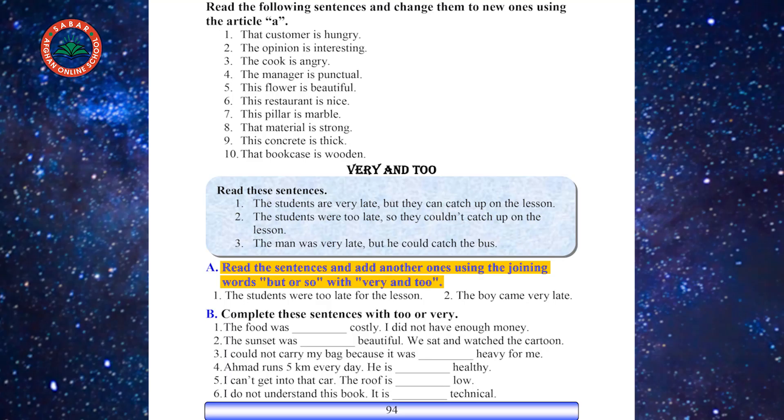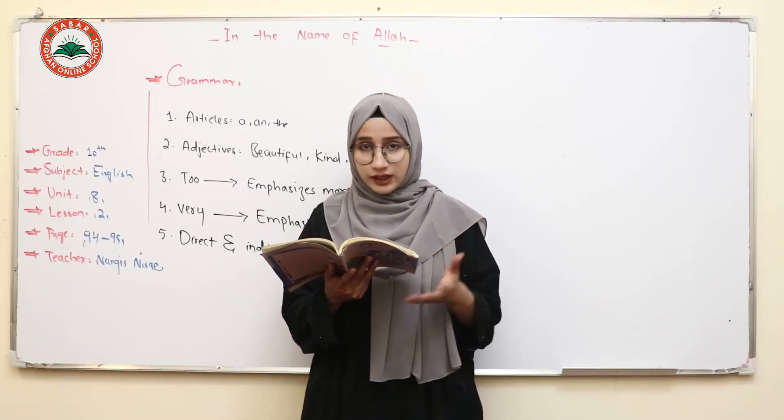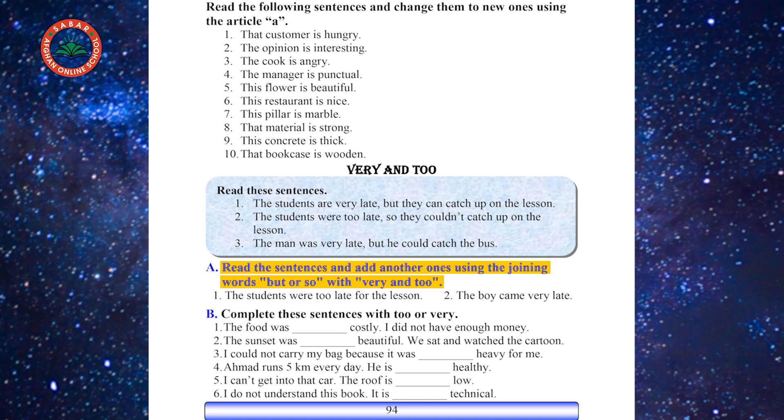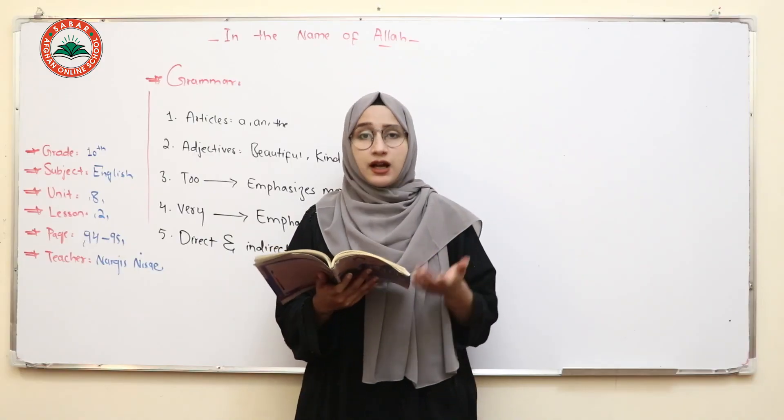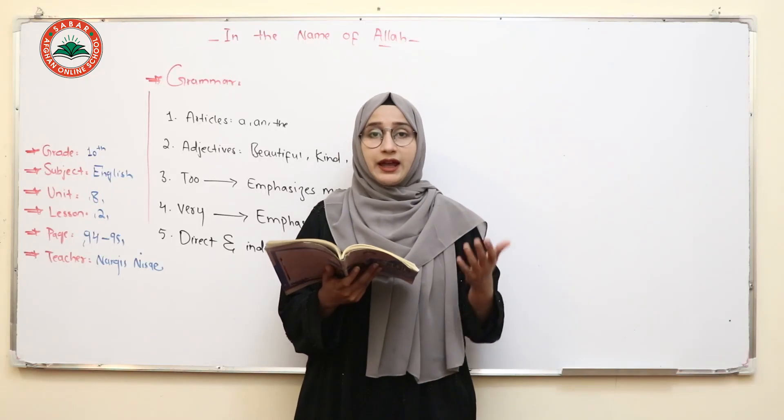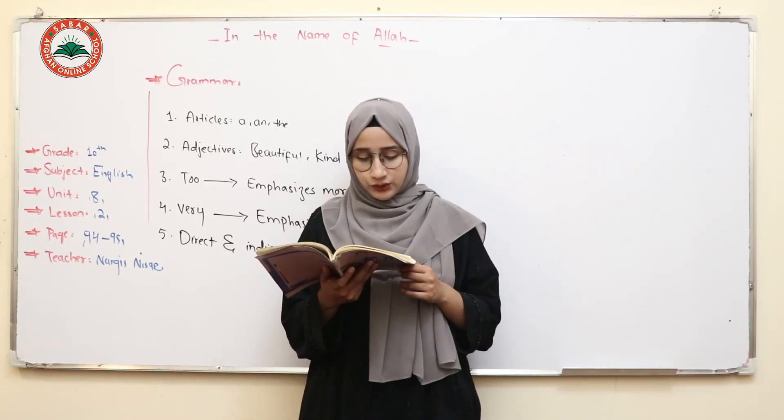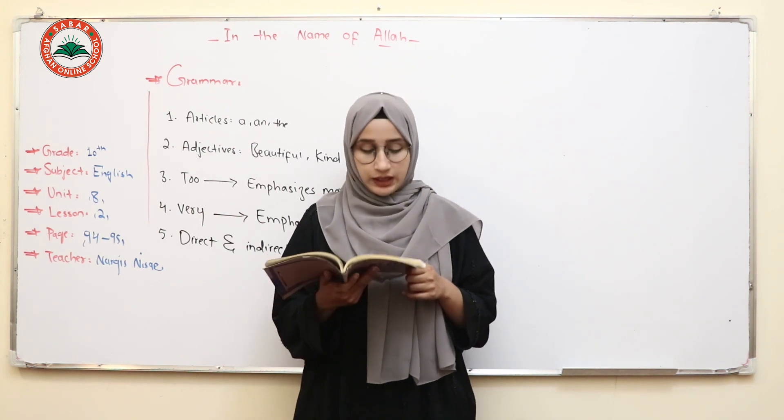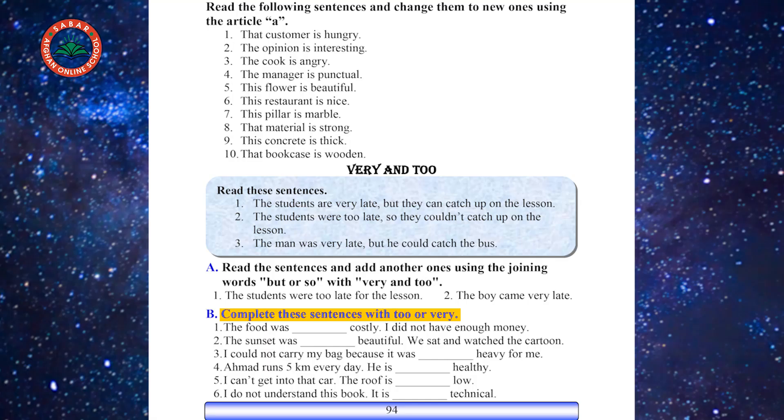So dear students, now let's get to the exercises part A. Read the sentences and add another ones using the joining words but or so with very and too. It's up to you. You have to make some sentences using but or so and very and too. This is your homework. Now let's come to part B. Complete these sentences with too or very. Number 1, the food was blank costly. I didn't have enough money.